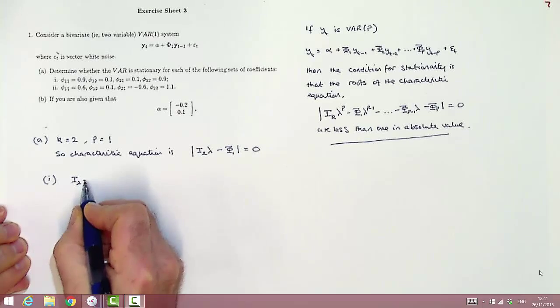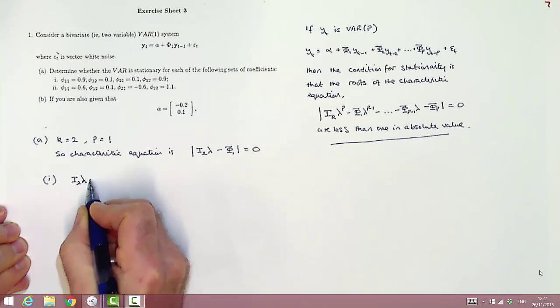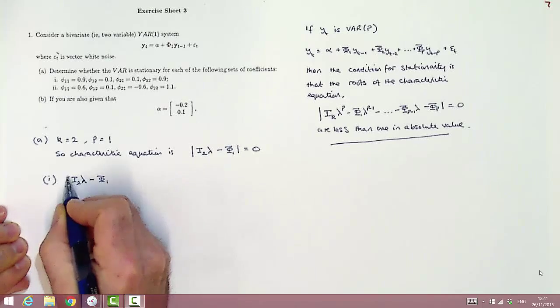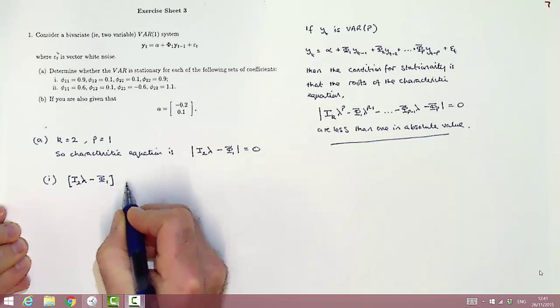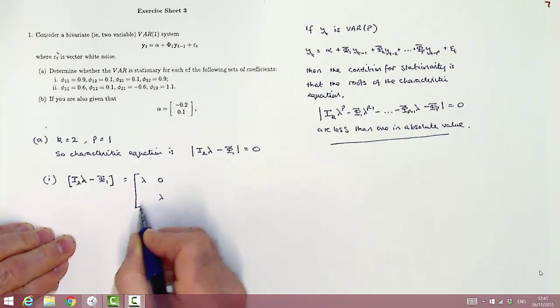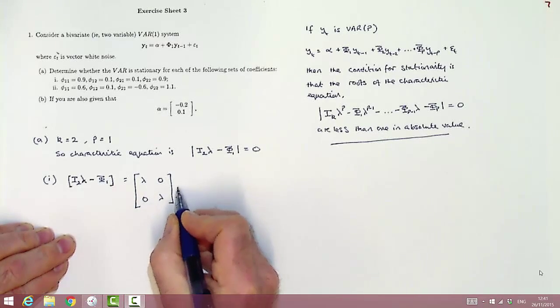Now what we need to do is to evaluate that for the different choices of phi given in the question. We'll do it in two steps. First, we'll find I2 lambda minus phi1, and then we'll use that to get the relevant determinant.